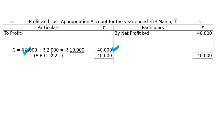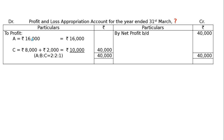Deficiency हो गया 2,000, क्योंकि C को guarantee 10,000 का है. C का actual share 8,000 बना (40,000 × 1/5), so the deficiency is 2,000. यानि 10,000 लिख के, 8,000 माइनस करके जो 2,000 होगा — this is filled in. A का share है 16,000, क्योंकि 40,000 × 2/5.